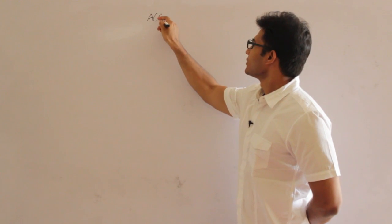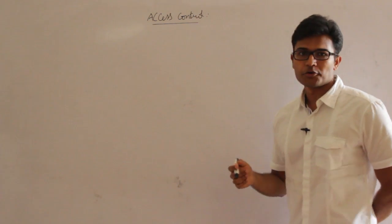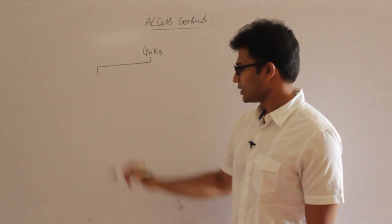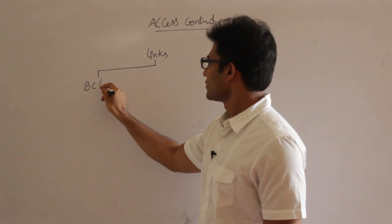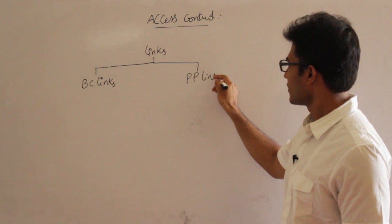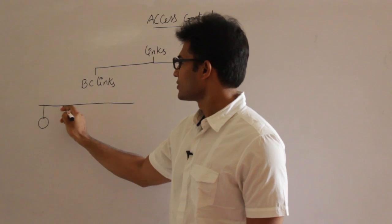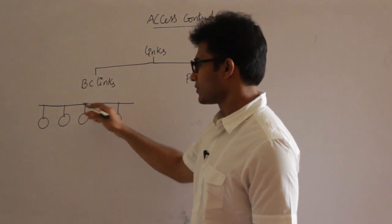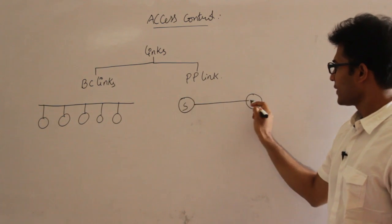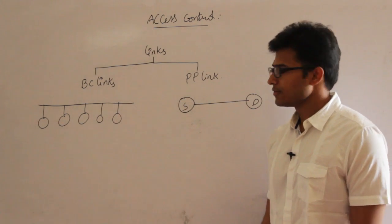Let's talk about access control methods. Till now we have seen flow control. In general, there are two kinds of links: one is broadcast link, and the other is point-to-point link. Broadcast link means I have a common channel to which many stations are connected — this could be wireless also. Point-to-point means I have a source and a destination, and both are connected by a single wire. This is called a point-to-point channel, and the other is called a broadcast channel.